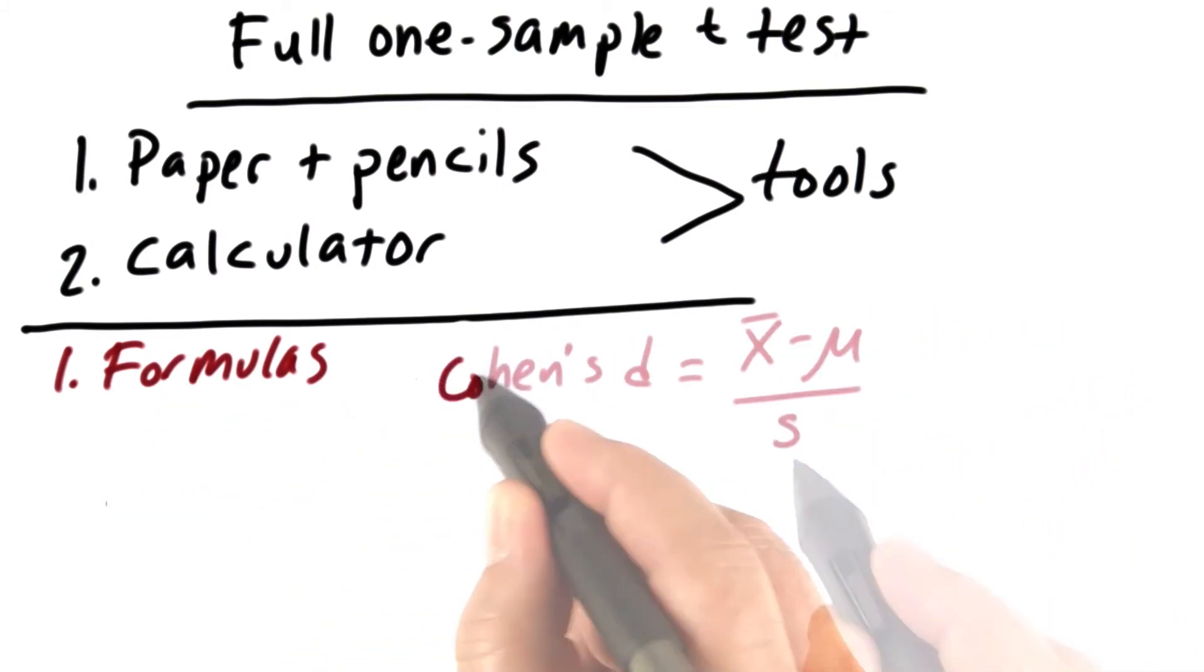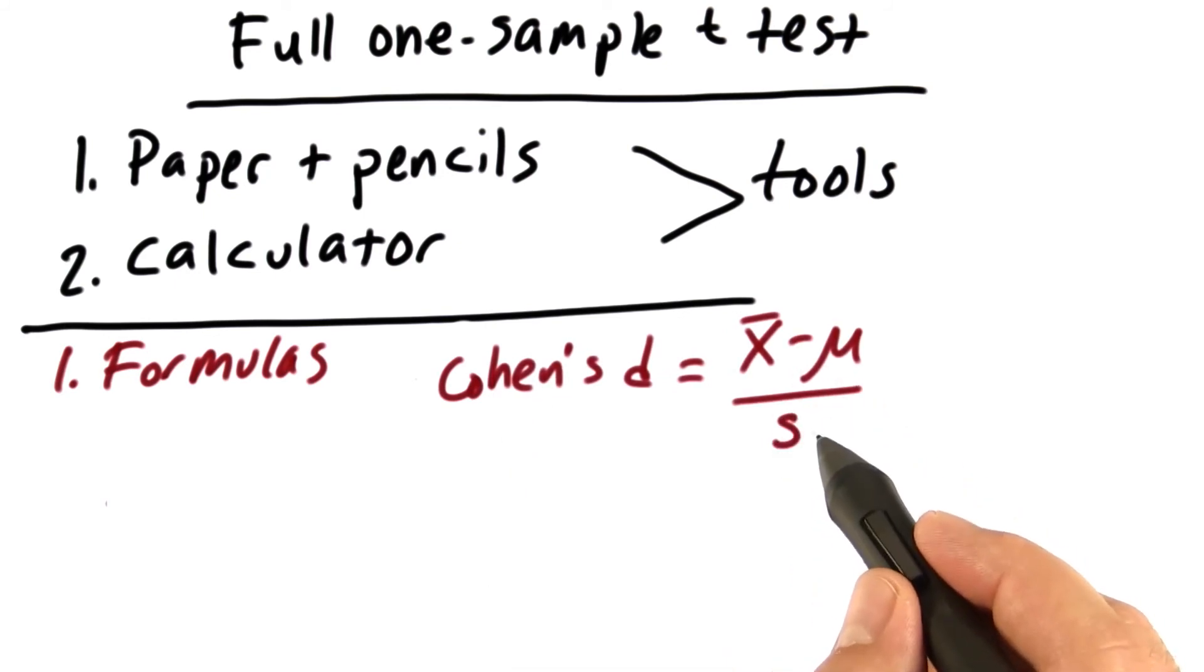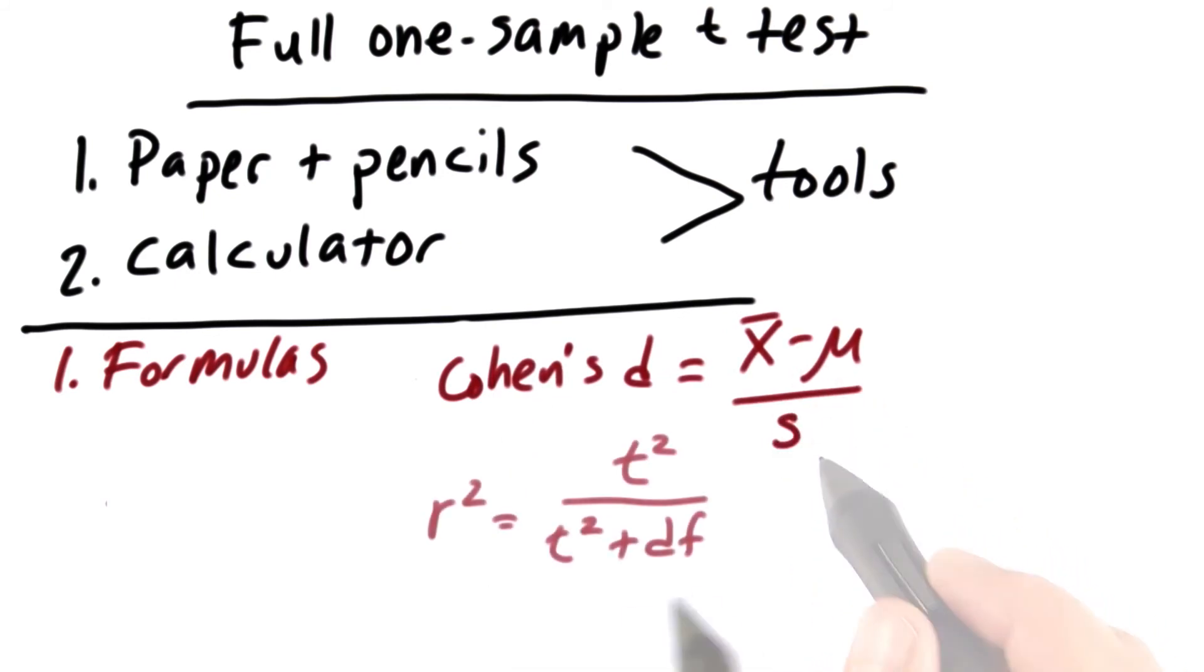You'll also need Cohen's d, which is the mean difference divided by the standard deviation for the sample. And finally, r-squared, which is t-squared over t-squared plus degrees of freedom. Again, this is not t-critical. This is the t that comes from the t-test.